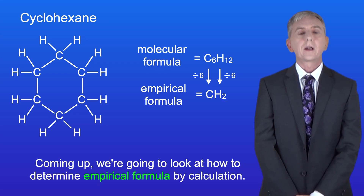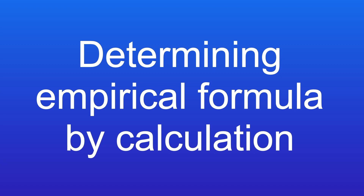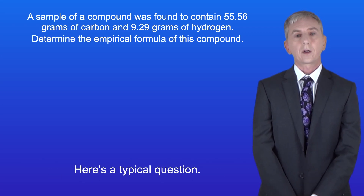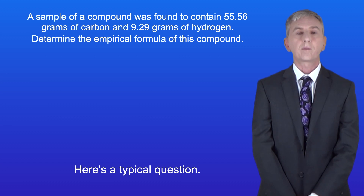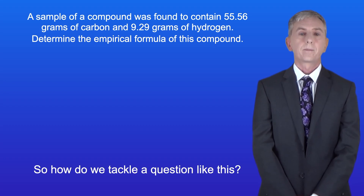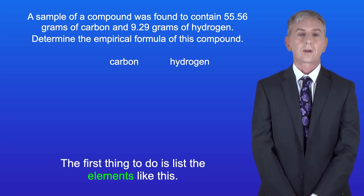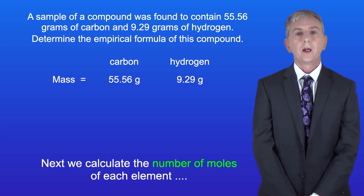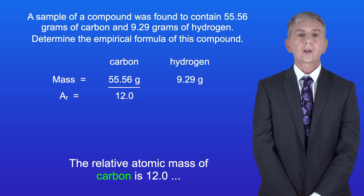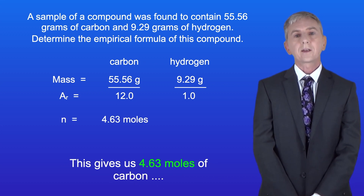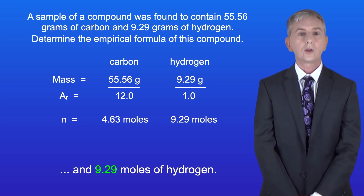Coming up we're going to look at how to determine an empirical formula by calculation. In the exam you could be asked to determine an empirical formula by calculation. Here's a typical question: a sample of a compound was found to contain 55.56 grams of carbon and 9.29 grams of hydrogen — determine the empirical formula of this compound. The first thing to do is list the elements and write the masses under each element. Next we calculate the number of moles of each element by dividing the mass by the relative atomic mass. The relative atomic mass of carbon is 12.0 and of hydrogen is 1.0. This gives us 4.63 moles of carbon and 9.29 moles of hydrogen.